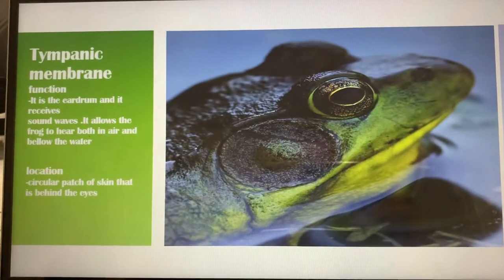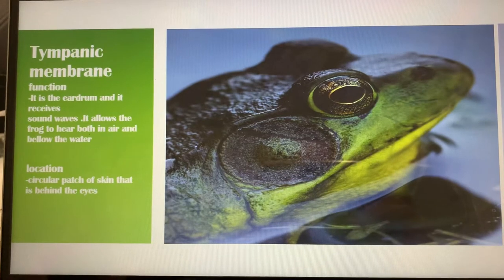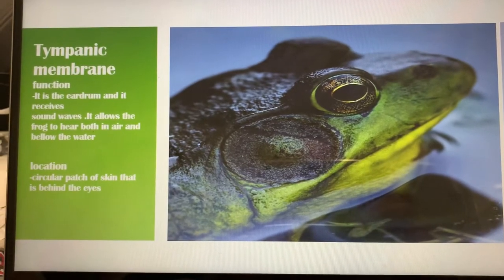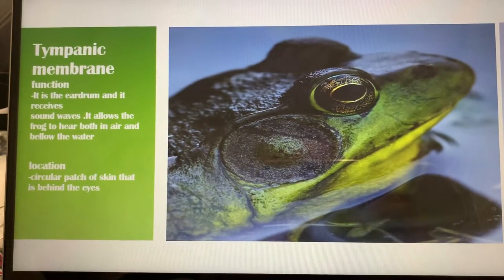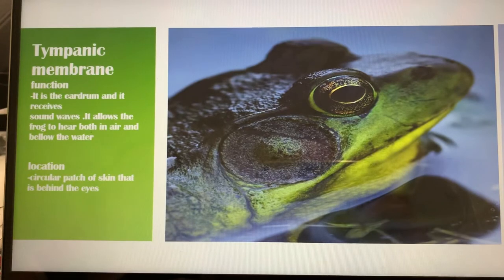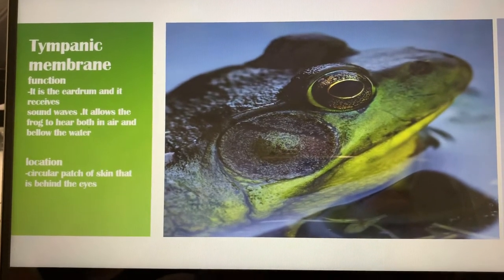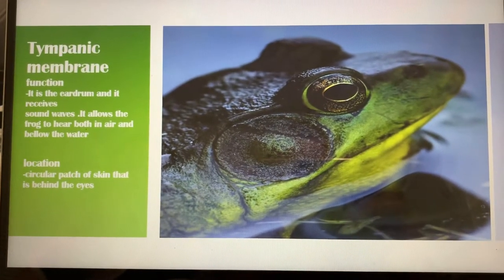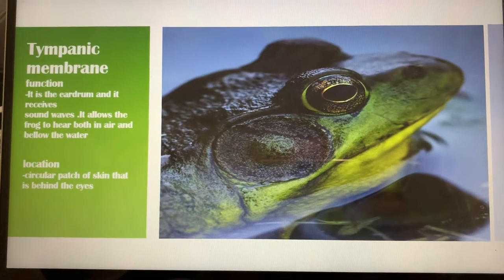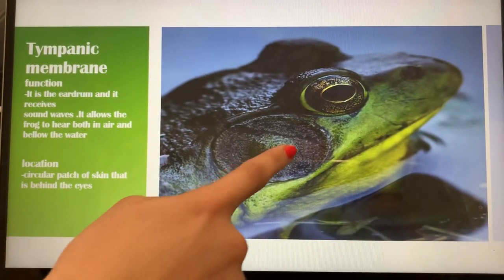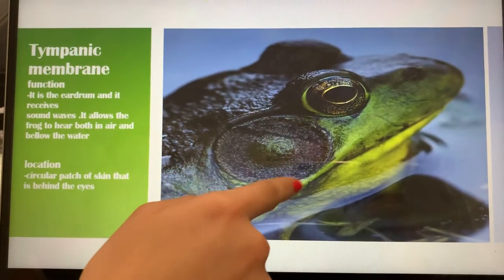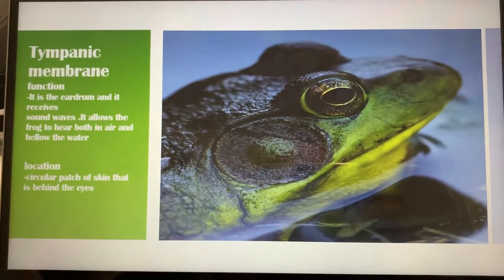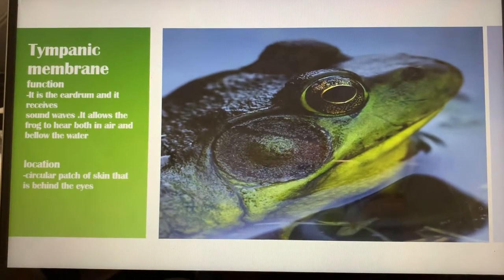Next we have the tympanic membrane. The tympanic membrane is basically the eardrum of the frog. It receives sound waves and it also allows the frog to hear both in air and below the water. This circular patch of skin that is behind the eye is where the tympanic membrane can be found.